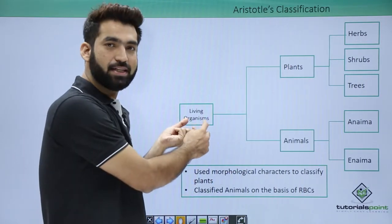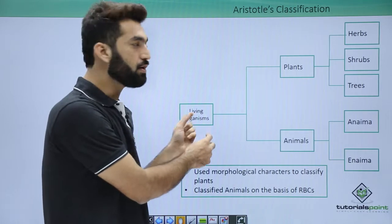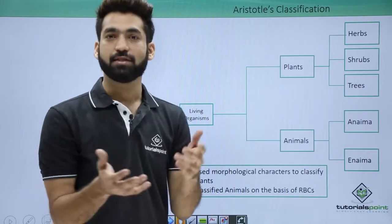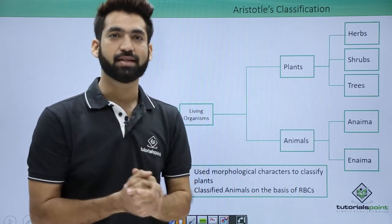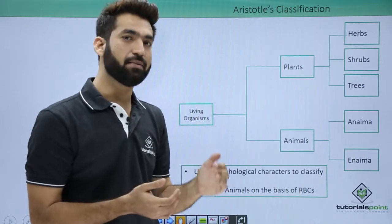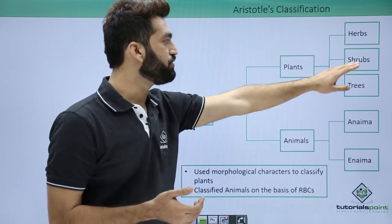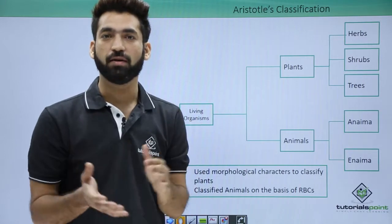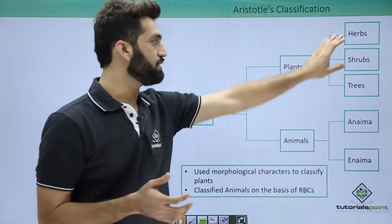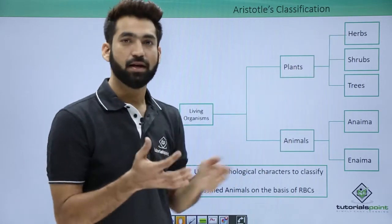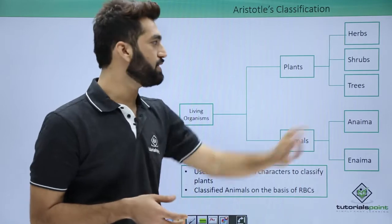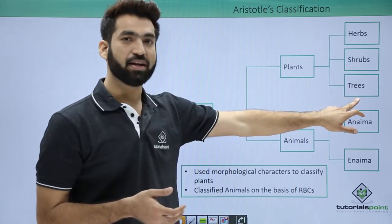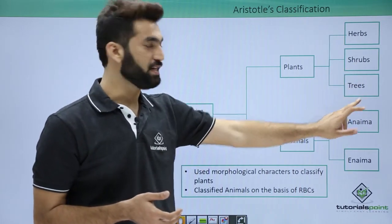Aristotle divided living organisms into plants and animals. For plants, he looked at the morphology — specifically the height — and classified them into three groups: herbs, shrubs, and trees. Herbs were the smaller plants, slightly bigger and bushy plants were classified as shrubs, and the bigger plants were classified as trees.